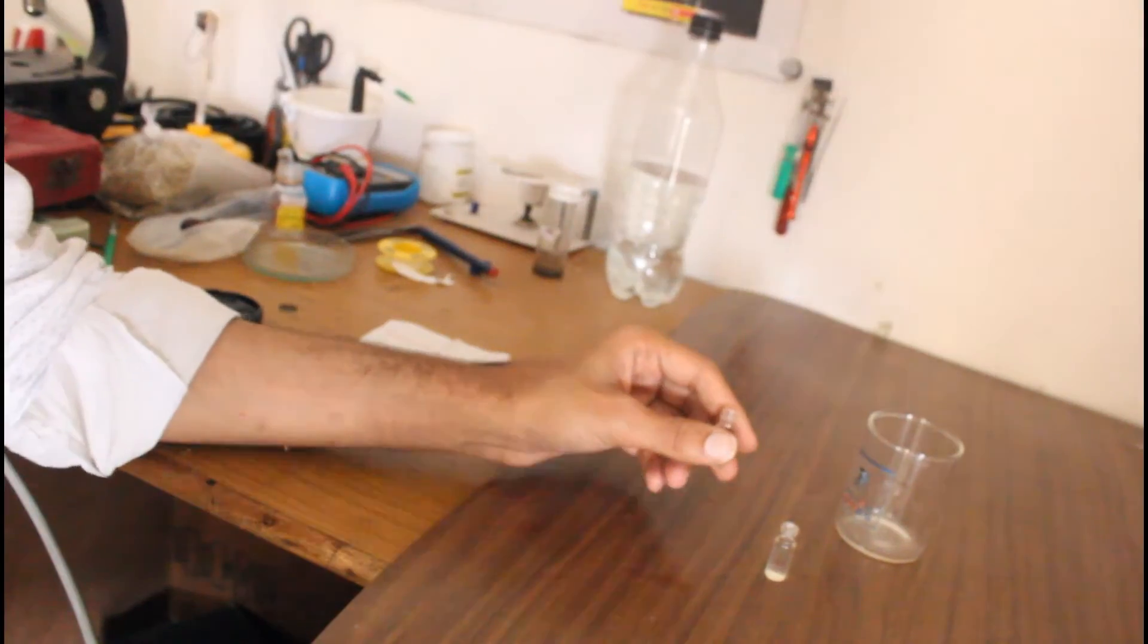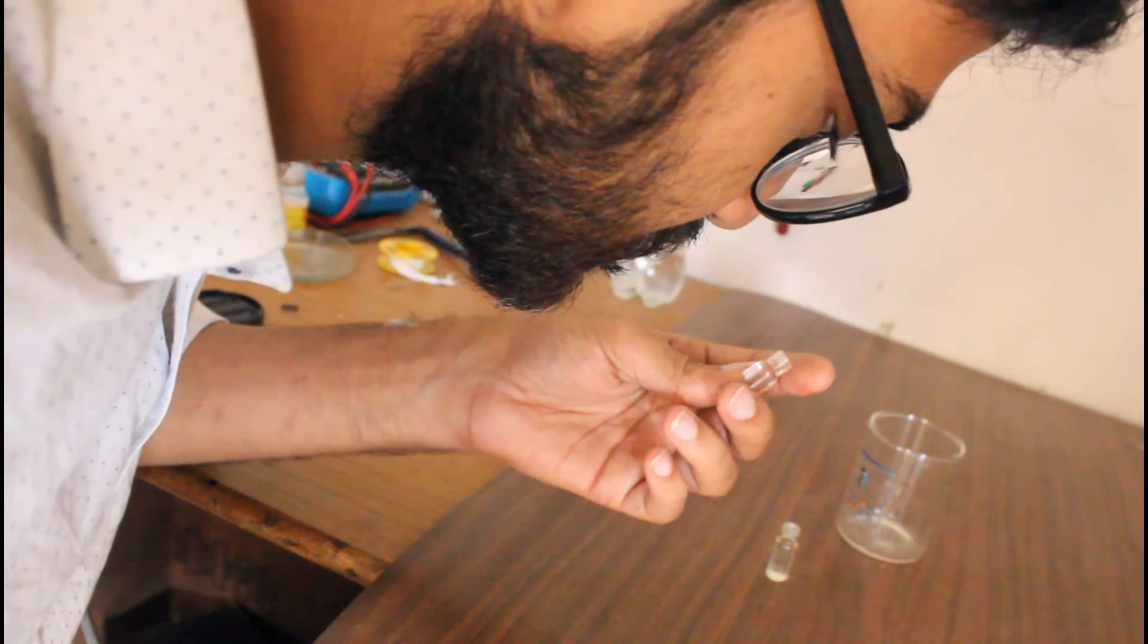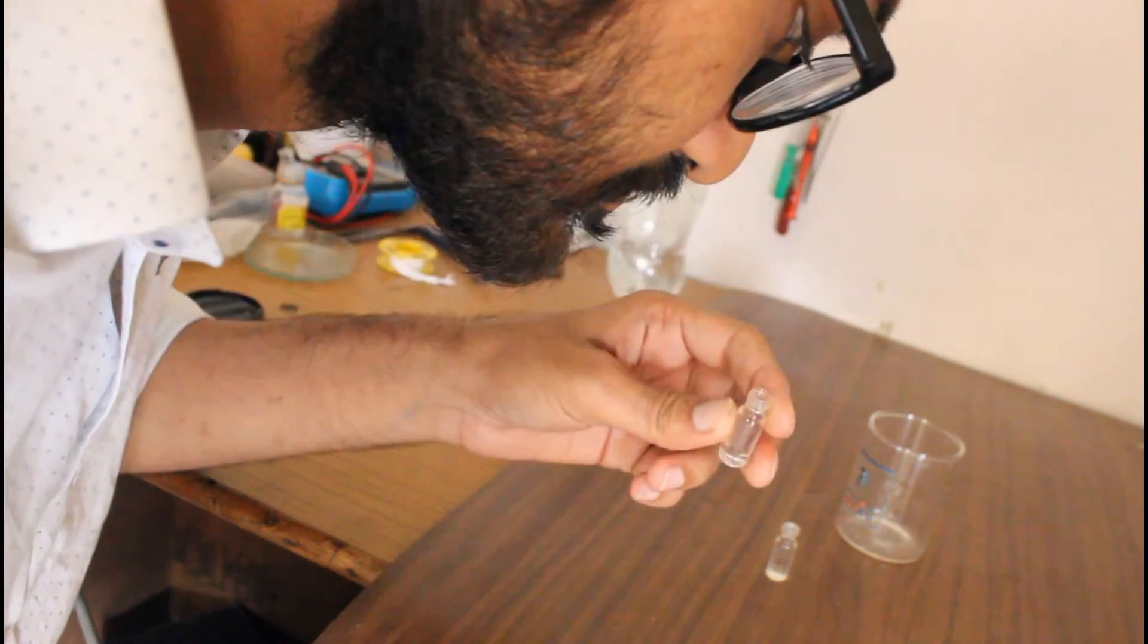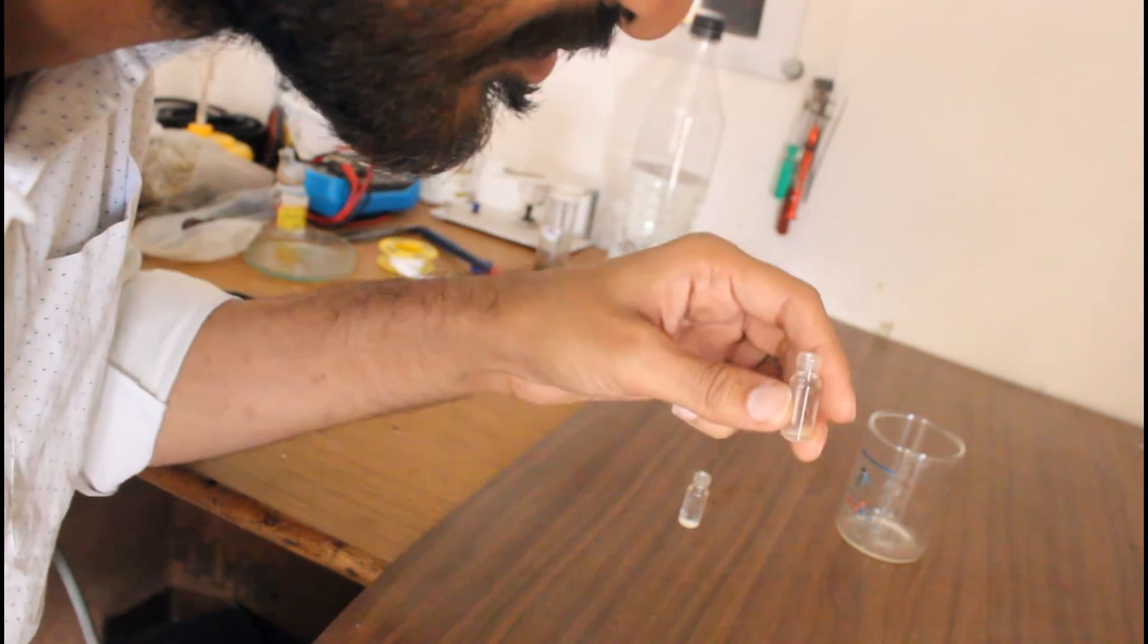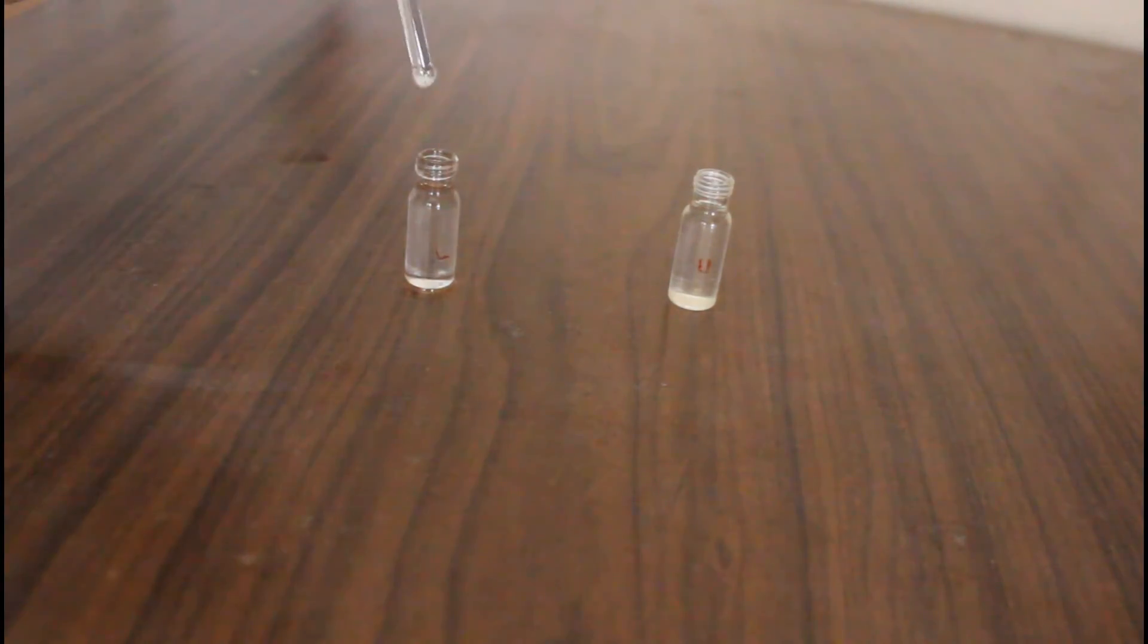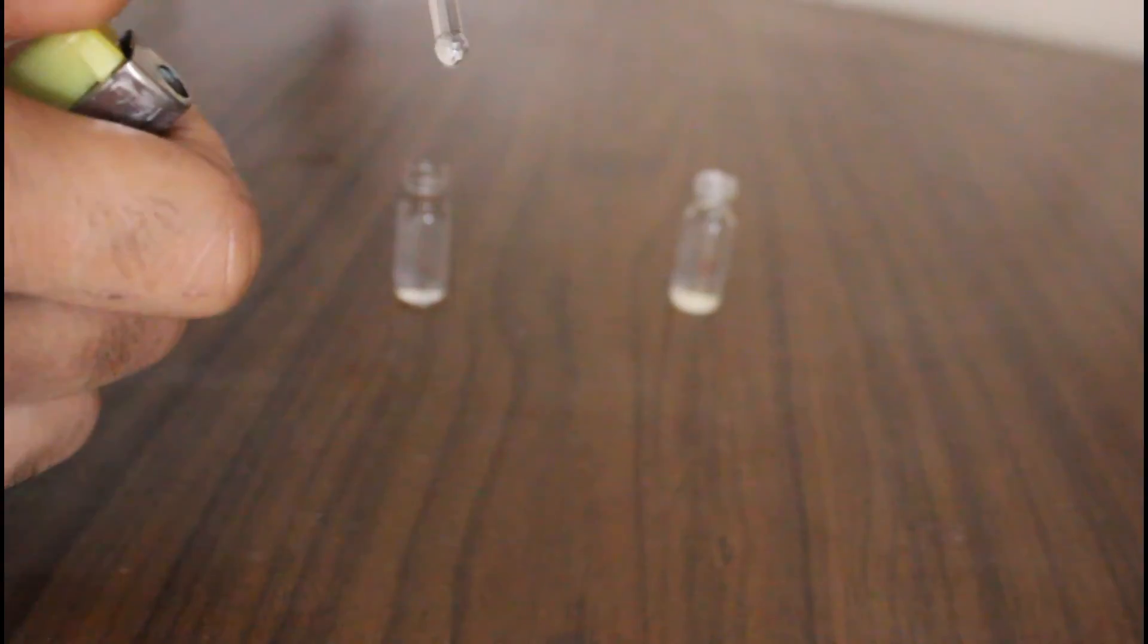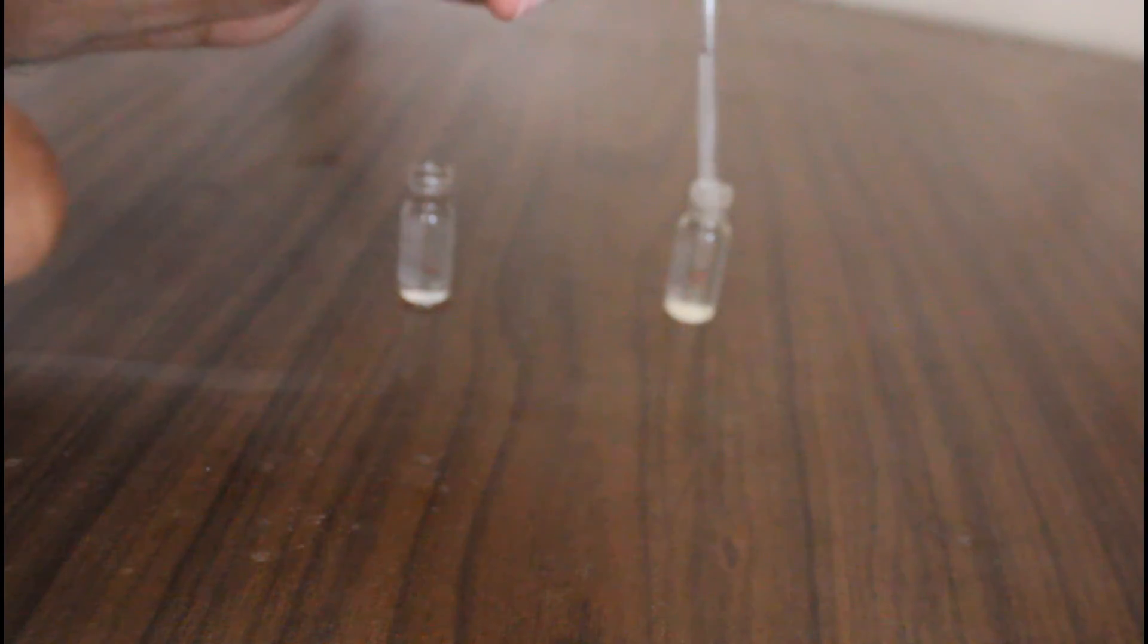The sample L smells like acetone. And this sample U also has a rough smell actually quite similar to the acetone. Let's have a flame test. The sample L burns quite good while the sample U is not flammable.